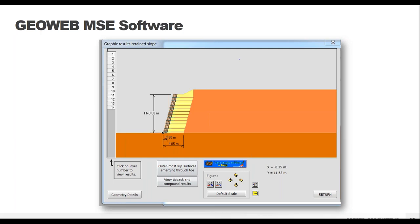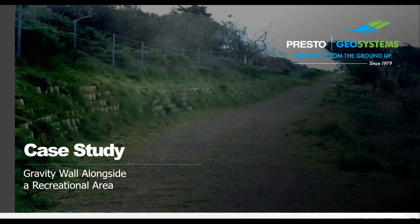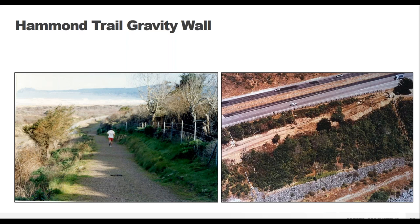Our first case study is going to be for a gravity wall project - the Hammond Coastal Trail out in California. The slope between the roadway and the trail was badly eroded and needed to be shored up to allow for safe use of the trail. Slope erosion especially below roads or other areas with live loads is really common, and building a retaining wall is a great way to mitigate that problem for the long term rather than doing minor fixes year after year.